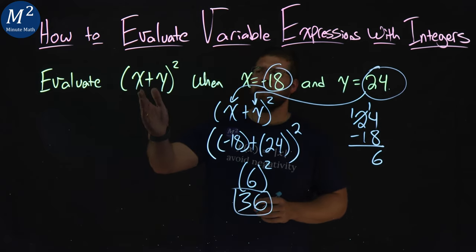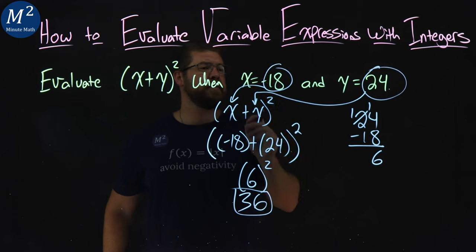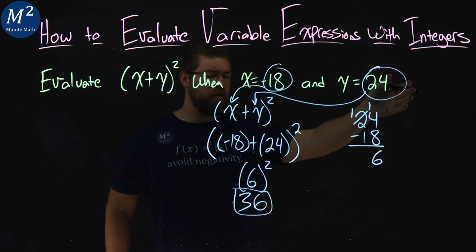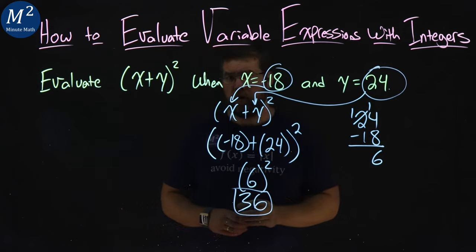And there we have it. We've evaluated x plus y all squared when x equals negative 18 and y equals 24, and we got 36.